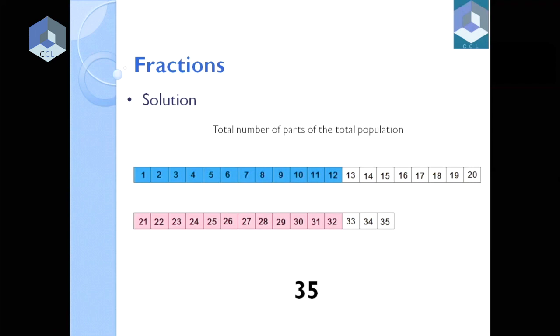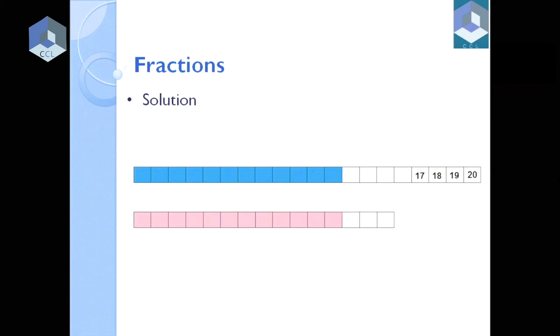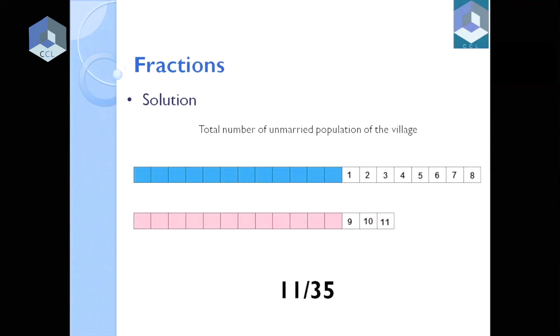The total population. And out of which, if I divide the white part, which is the 11 parts, so unmarried part is 11 to 35. We have equaled the numerator here, not the denominator.